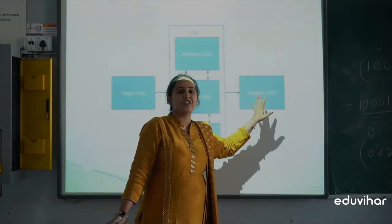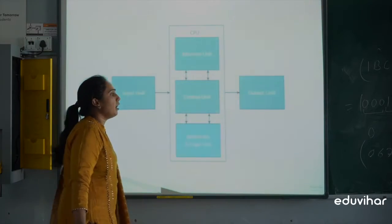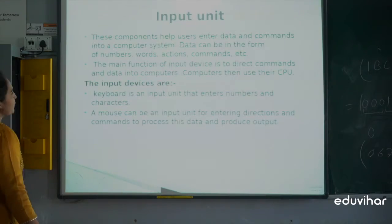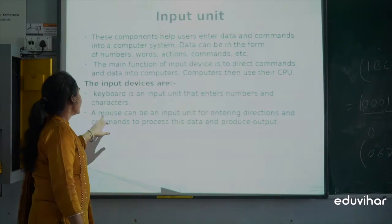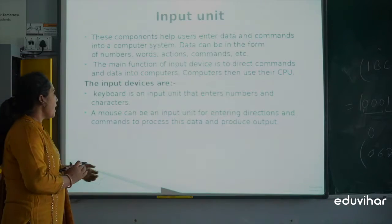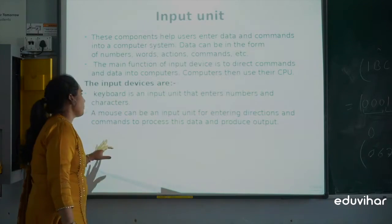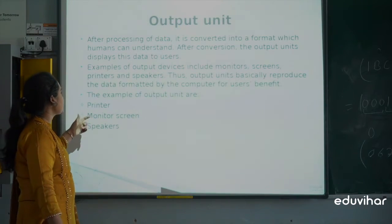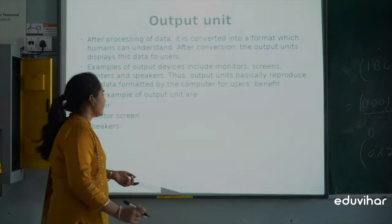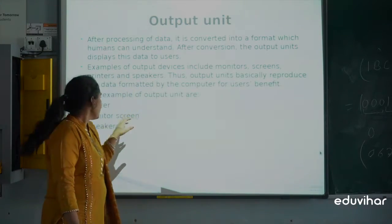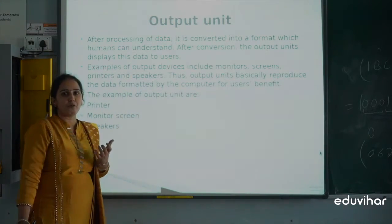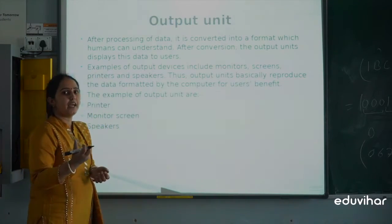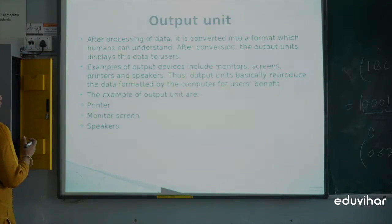With the help of the output unit, you can display the desired output — for example, printers, plotters, speakers, and monitors. Input devices include keyboard, mouse, and pointing devices. Output devices include plotters, printers, and speakers, which can display data and documents on screen, and sound devices such as speakers.